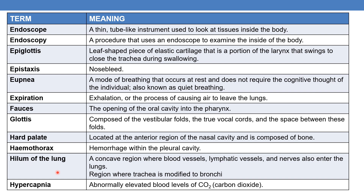Hilum of the lung is a concave region where blood vessels, lymphatic vessels and nerves enter the lungs. It is also the region where the trachea is modified into bronchi.